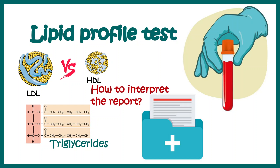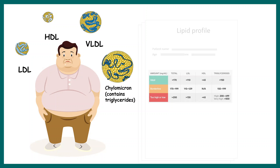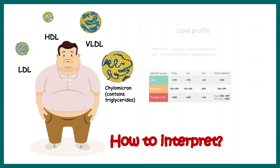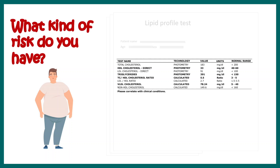In this video we'll talk about the lipid profile test and how to interpret the report. Your doctor might have prescribed a lipid profile test and you see there are different terminologies in that report like LDL, HDL, VLDL, and triglycerides. This is a lipid profile test and you can see there are different test names on the left-hand side with specific values in units of mg per deciliter and a normal biological range provided.